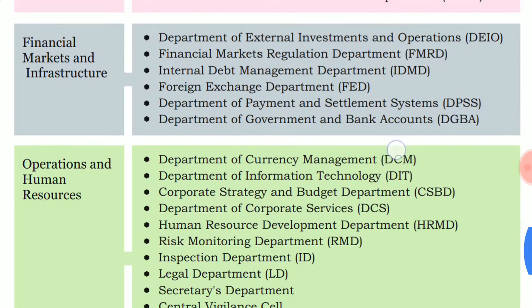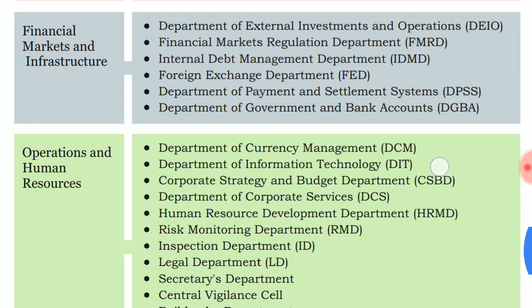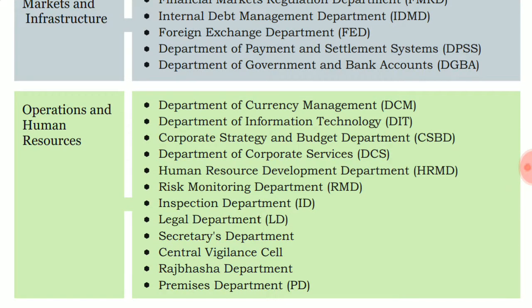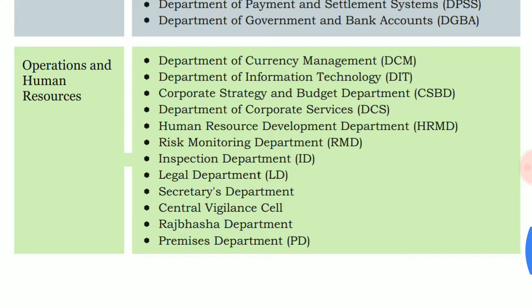The last cluster, Operations and Human Resources, includes the Department of Currency Management, Department of Information Technology, Corporate Strategy and Budget Department, Department of Premises and Marketing Services, HRMD, Risk Monitoring Department, Inspection Department, Legal Department, and Secretaries Department.